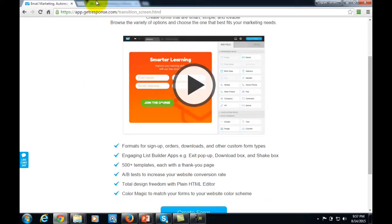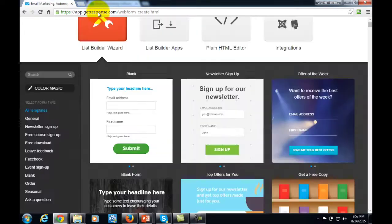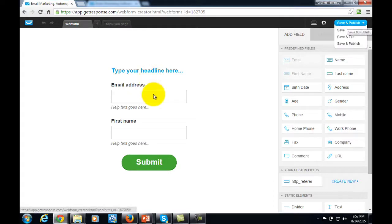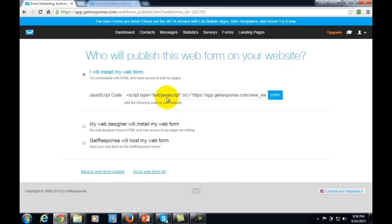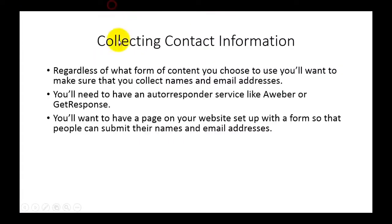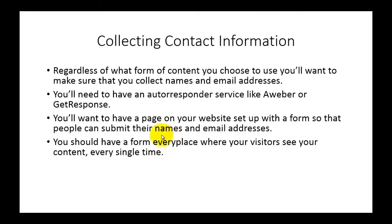What you want to do is go in and set up a list and a form inside your autoresponder — in GetResponse, for example, you create a form, choose a template, save and publish it, then grab the HTML code and add it to your website. You want that form to appear everywhere your visitors will see your content — on every blog page, every post, linked in every video, and at every point where you have audio.